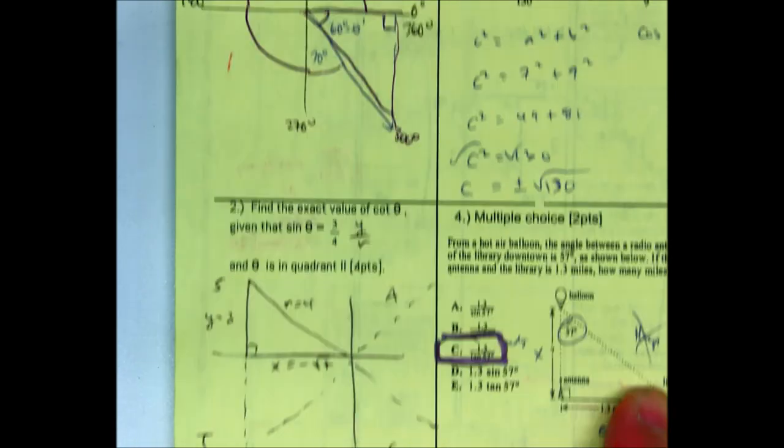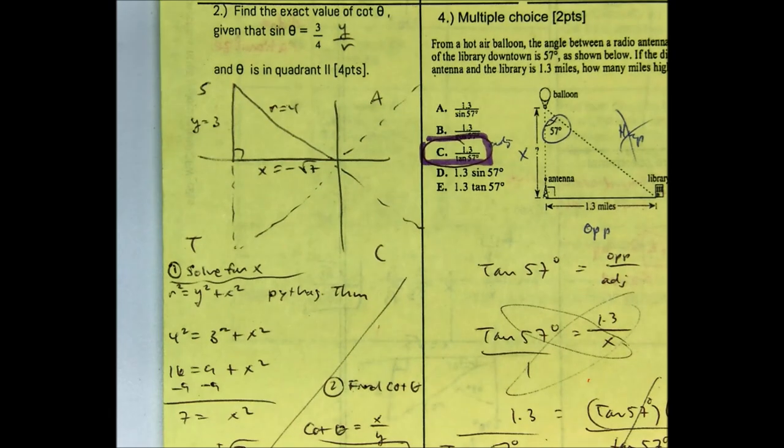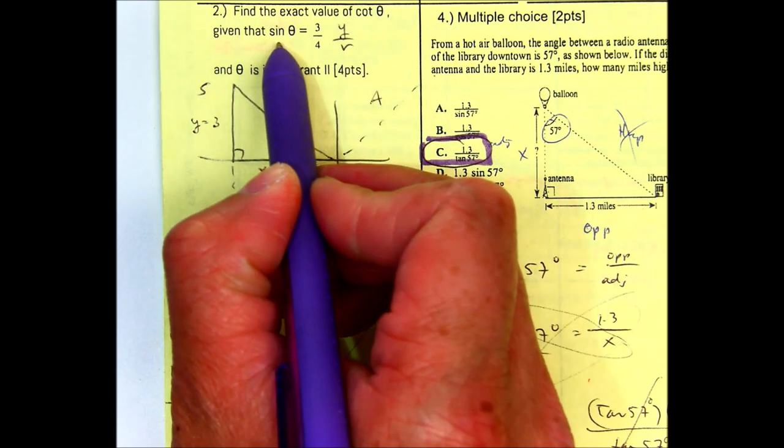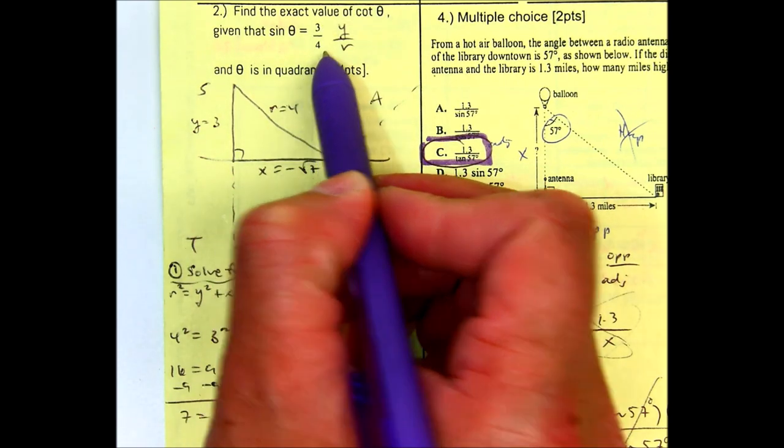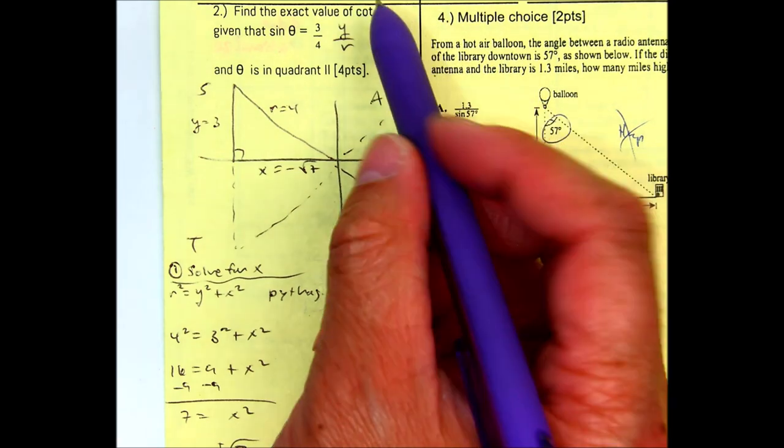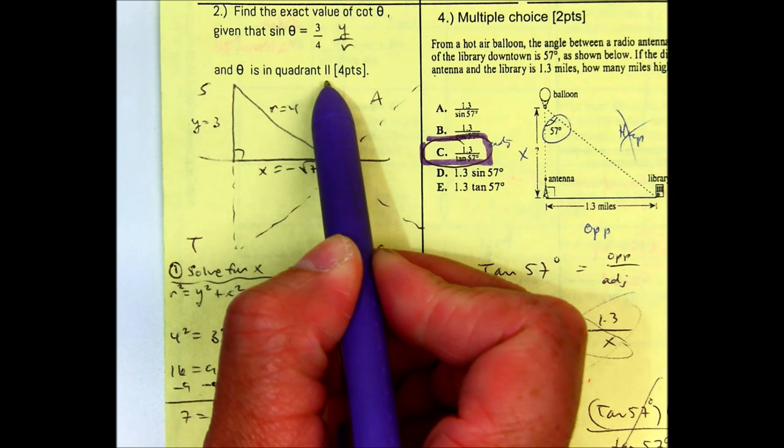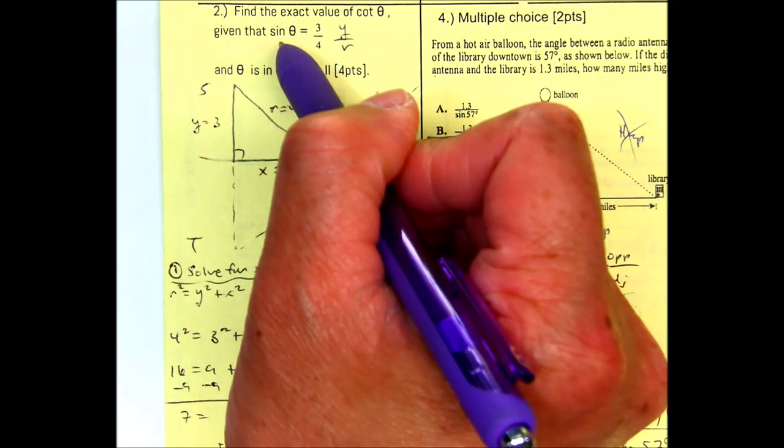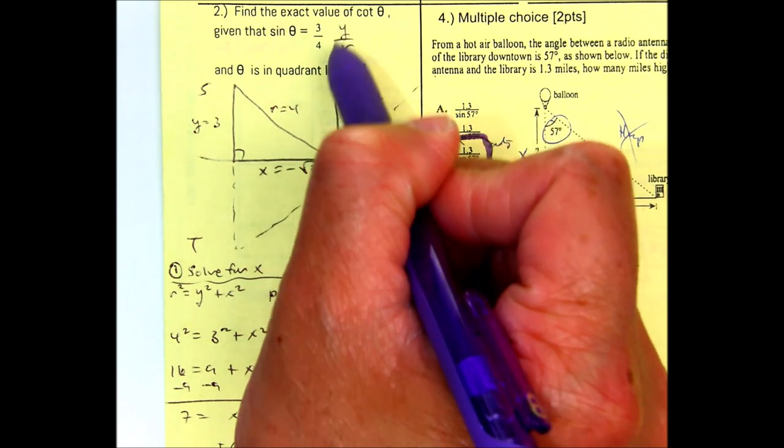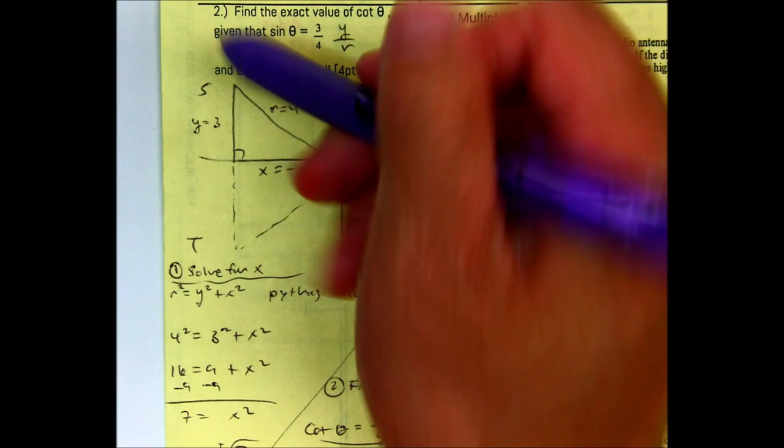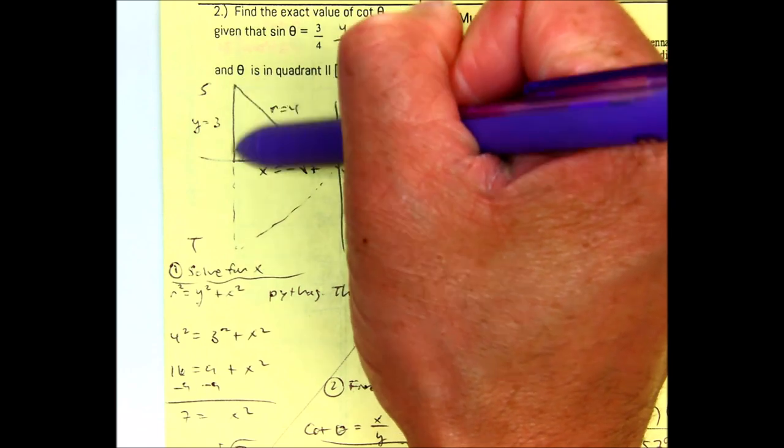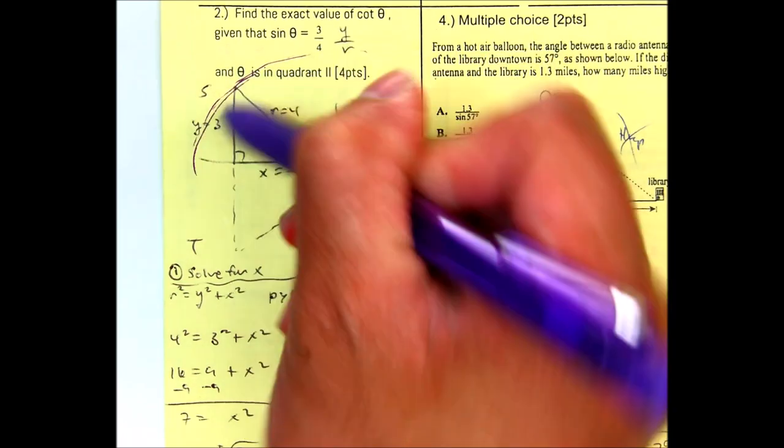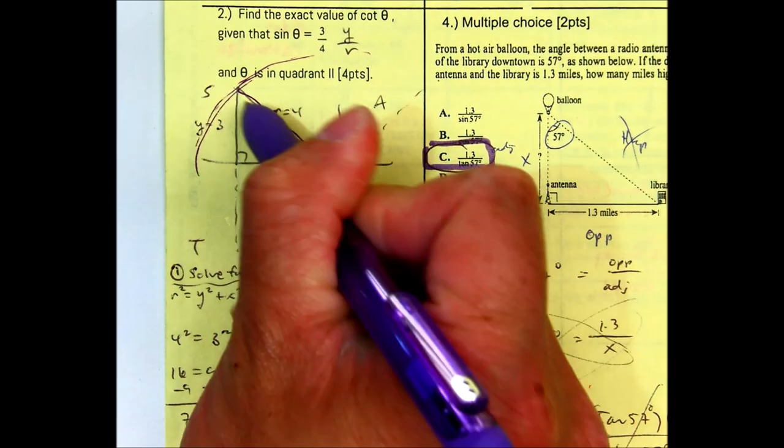Question number two. Find the exact value of cotangent of theta, given that sine of theta is 3 over 4 and theta is in quadrant 2. So notice my bow tie. Sine is y over r, so my y value is 3, my r value is 4. This is your y value because it parallels the y axis. R is the radius, so if you draw a circle around it, center to the point on the circle, so this is 4.